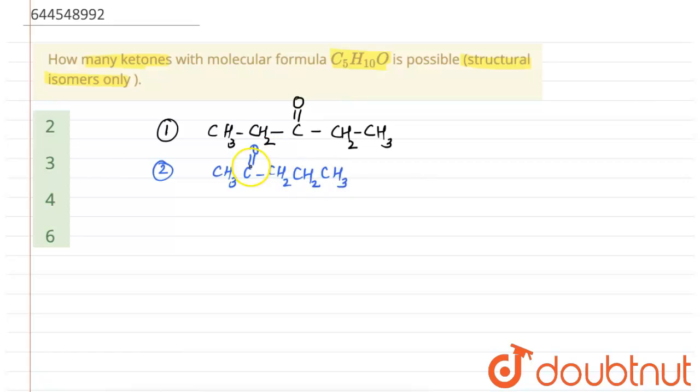Now if we are writing this as CH3-CH2-CH2-C=O-CH3, this is the other possible isomer of C5H10O in terms of ketone.